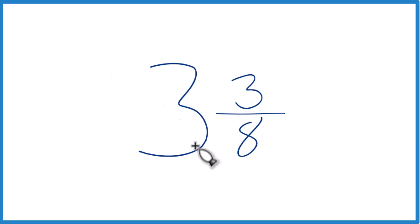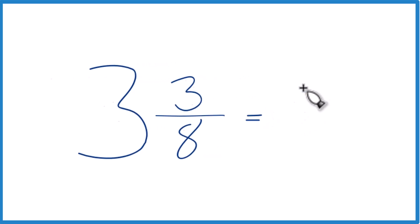We take the whole number, 3 times 8. So 3 times 8 is 24, and then we add that to the numerator, to 3. So 3 times 8, 24, 24 plus 3 equals 27.